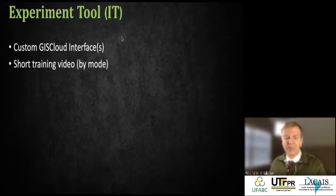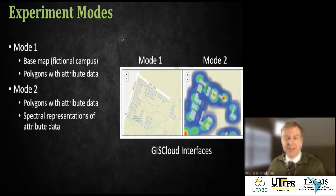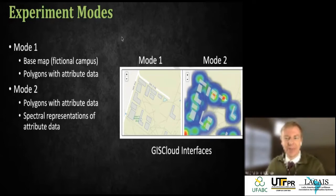We used GIS Cloud with a short 30-second training video on how to use the tool. Mode one showed the campus with polygon building shapes — clicking any shape gives information about that building. Mode two also included a thematic layer — a heat map. For example, the heat map for wireless capability showed that two buildings at the top of the campus had great wireless networks, so that's where you'd start looking for the coffee shop.